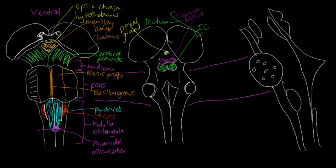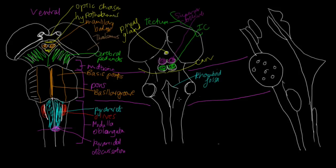If we go towards the level of the pons, we find a few other structures. Back here we'll have the exit of the trochlear nerves. This diamond-shaped region is called the rhomboid fossa because it looks like a rhombus. The rhomboid fossa is where we find the fourth ventricle — this is the floor of the fourth ventricle. Inside is also known as the open medulla, because the pons lies above around this region, and some of the fourth ventricle extends into the medulla.